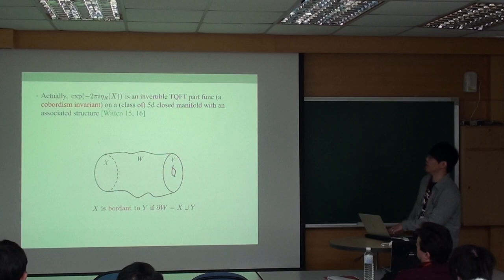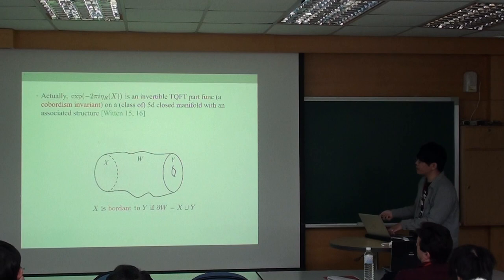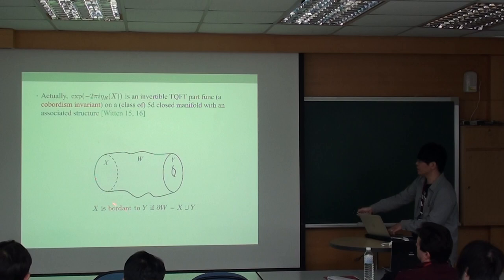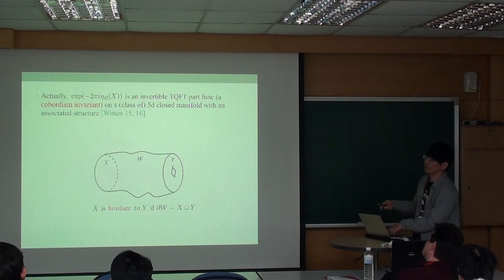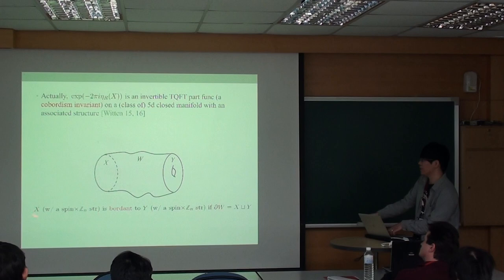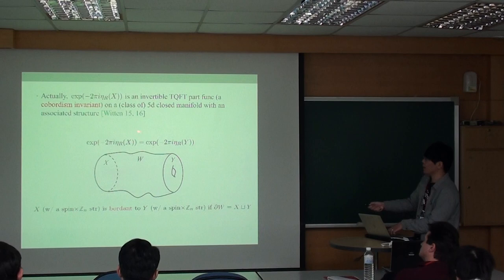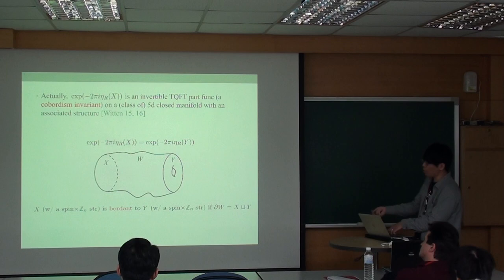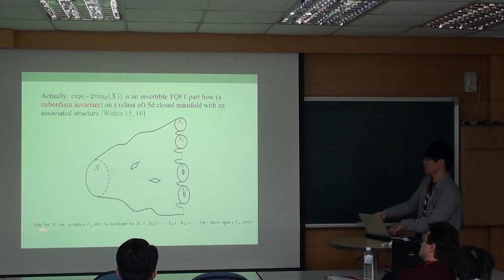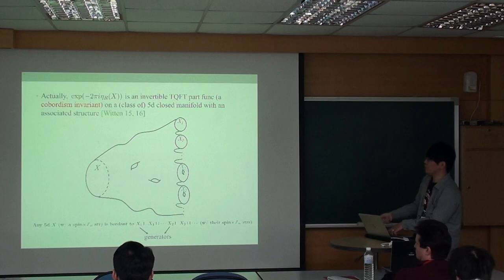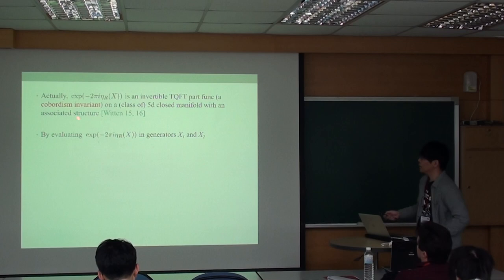Actually, this factor is an invertible topological field theory partition function, or more precisely, a cobordism invariant in the class of five-closed manifolds. Here the notion of cobordism is - I will briefly introduce the idea of it: X is cobordant to Y if the disjoint union of them is the boundary of a manifold in one dimension higher. Of course this can be more refined: X with some structure is cobordant to Y with some structure if they are the boundary of W with the same structure. If X is cobordant to Y, the eta invariant or the exponential eta invariant of them are also equal to each other. Any five-manifold with whatever structure can be generated by a set of manifolds which we call generators here. In this sense, in principle, we can compute the eta invariant of an actual five-manifold.